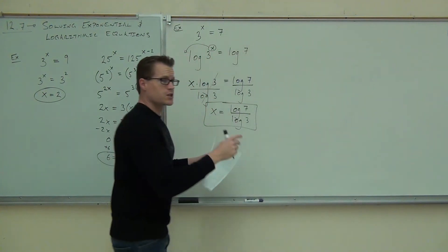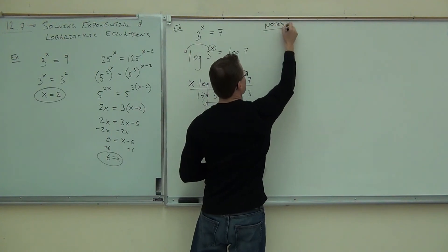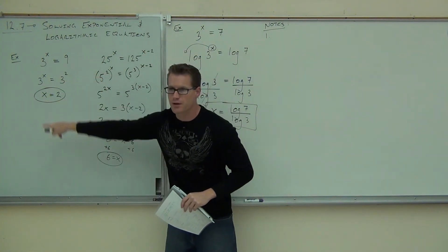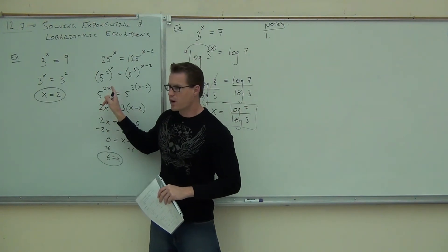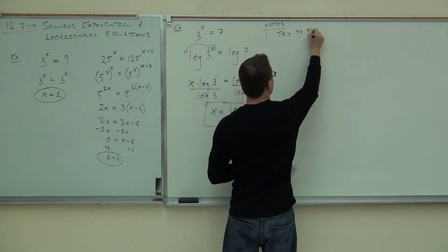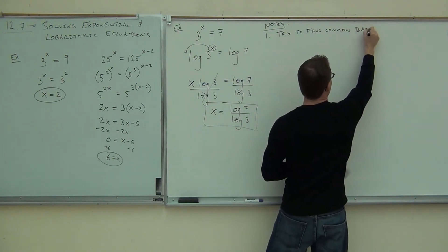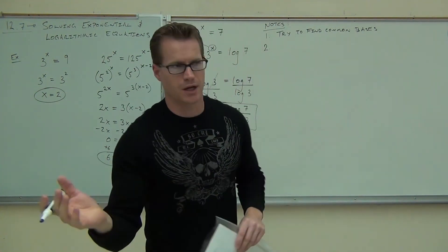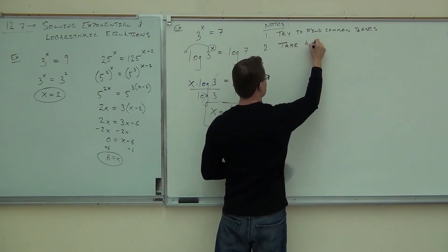So, the first thing you do is write a couple notes. Number one, you look for common bases like this. Why? Because your answers are nicer over here if you don't have a logarithm. You can work with that easier. So number one, you try to find common bases. If you can't, then you take a logarithm of both sides.